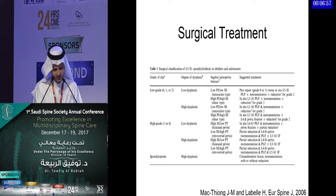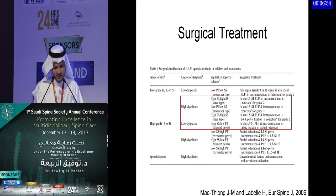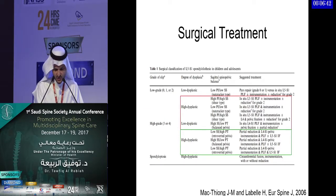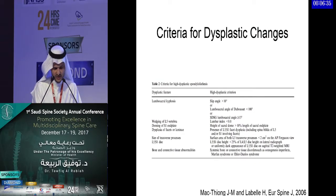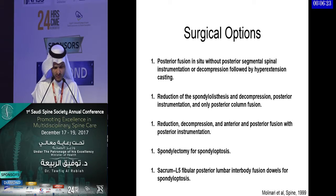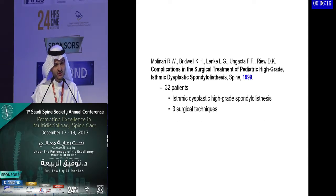A paper provided expert opinion on which cases to fuse in situ — the majority — while also introducing the level of dysplasia of the lumbosacral junction, reserving partial reduction for those with high-grade and highly dysplastic features. The surgical options are variable: posterior fusion without instrumentation, instrumentation with variable degrees of reduction, front-and-back approach, spondylectomy, and the fibular strut graft. The decision remains controversial.